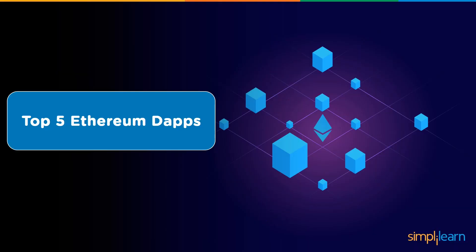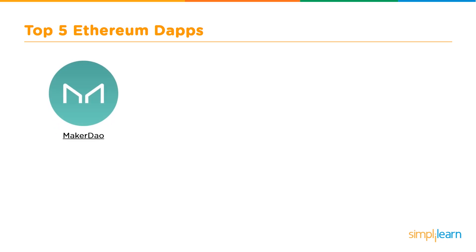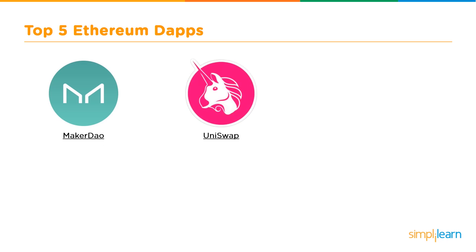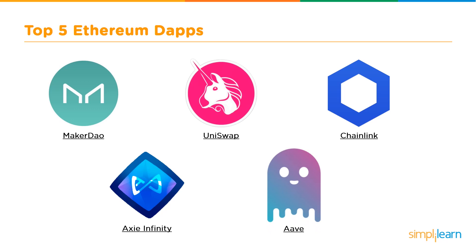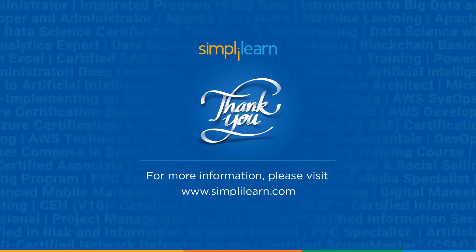Now let me take you through the five best Ethereum dApp projects. MakerDAO is an Ethereum-based protocol that creates the DAI stablecoin and allows for collateral-backed loans to be made without the use of a middleman. Uniswap is a decentralized cryptocurrency exchange protocol. Chainlink is a blockchain oracle network that is completely decentralized. Axie Infinity is a blockchain-based trading and battling game that lets players gather, breed, raise, battle, and trade token-based entities called Axies. And Aave is an Ethereum-based decentralized money market that allows users to lend and borrow a variety of crypto assets.